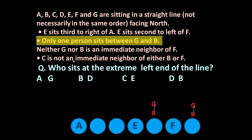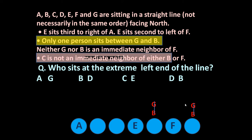C is not an immediate neighbour of either B or F. F is here, so C cannot occupy the position next to F. But where B is positioned is not yet clear, so let us underline this statement as well.